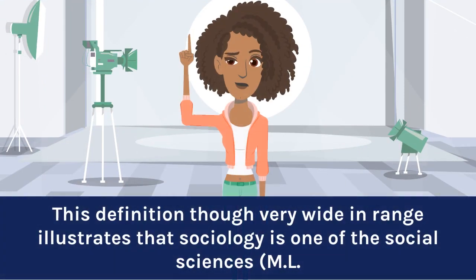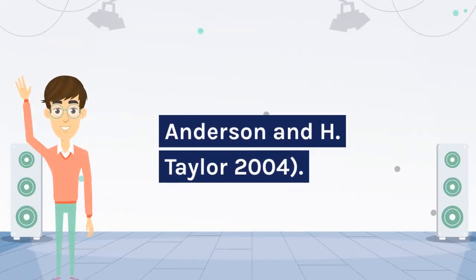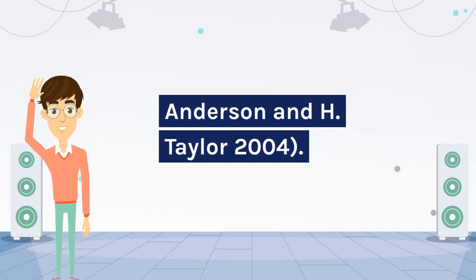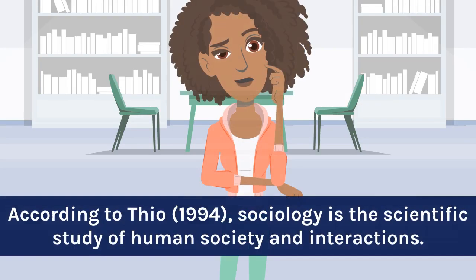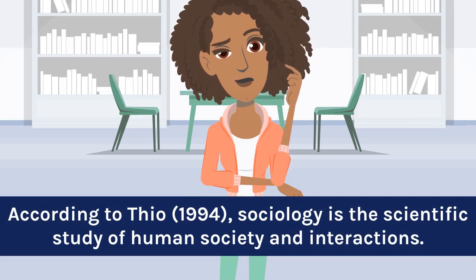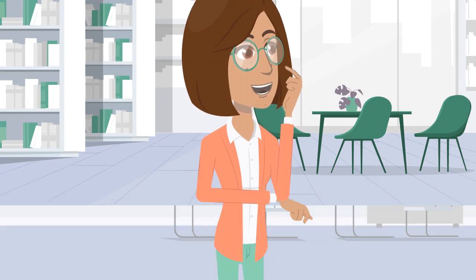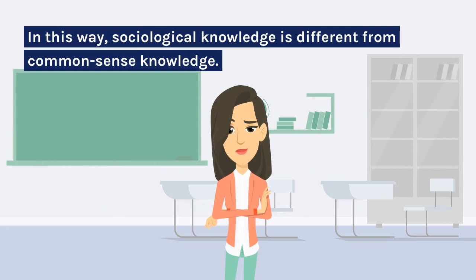Sociology is the study of human behavior in society. This definition, though very wide in range, illustrates that sociology is one of the social sciences — M.L. Anderson and H. Taylor, 2004. According to Theo, 1994, sociology is the scientific study of human society and interactions. Theo further stated that this definition emphasizes the use of systematic procedures in the study of human behavior. In this way, sociological knowledge is different from common sense knowledge.